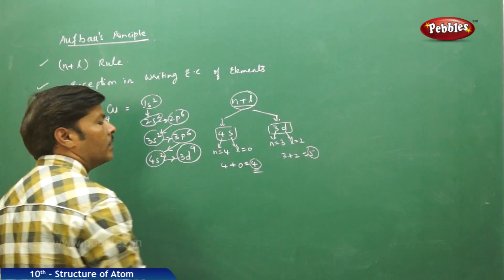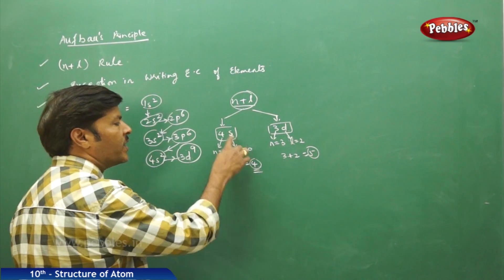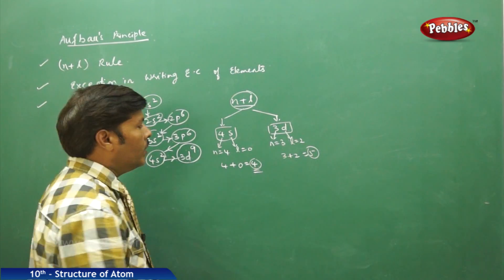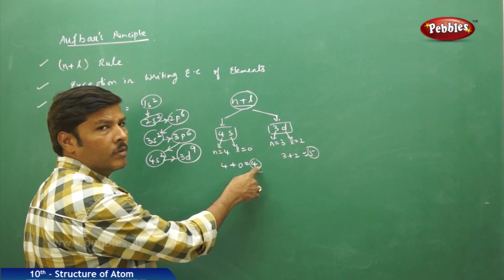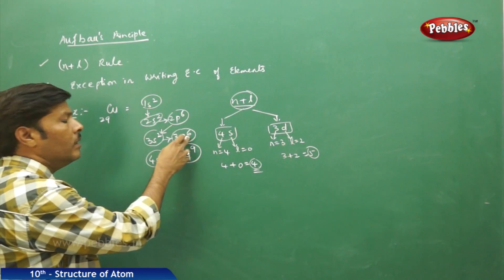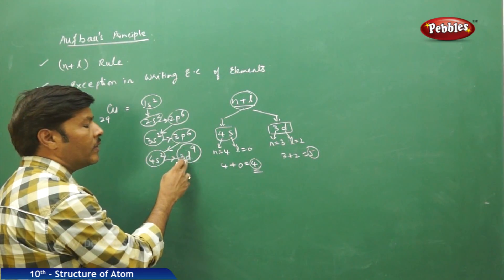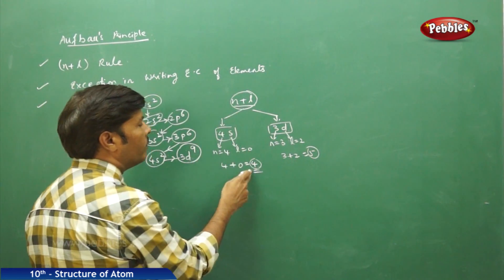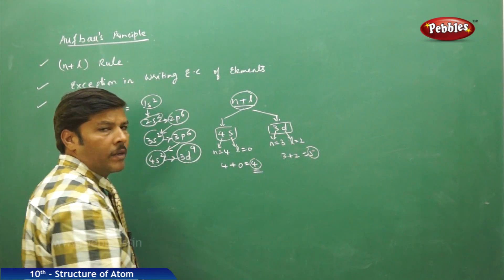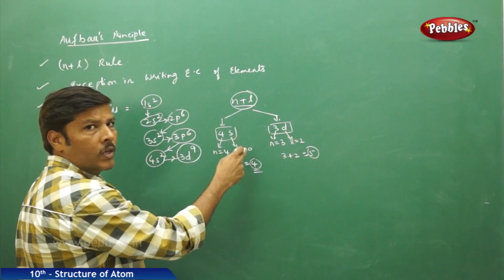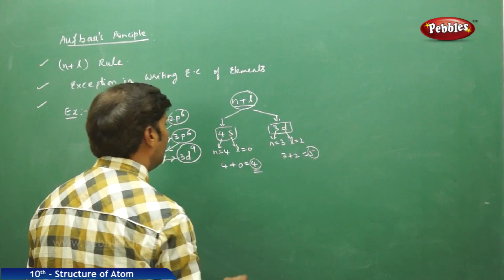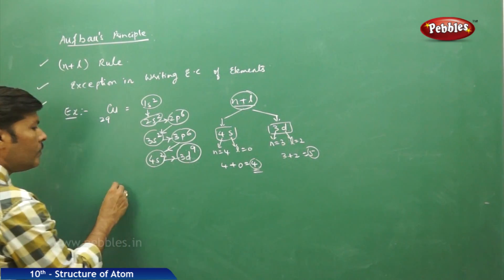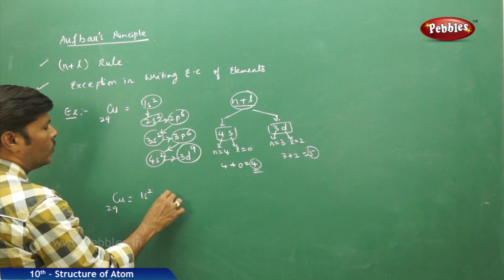Whichever orbital has the lesser n plus l value gets filled first. For 4s: 4 plus 0 equals 4. For 3d: 3 plus 2 equals 5. Since 4s has the lower value of 4, we fill 4s before 3d. That is why after 3p we go to 4s, then to 3d, because 4s has n plus l equal to 4 compared to 3d's value of 5.